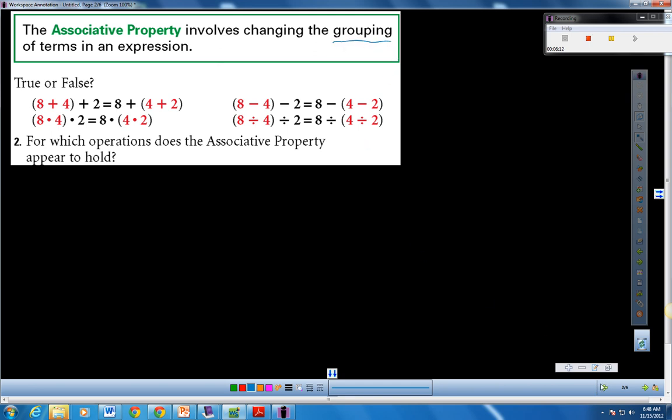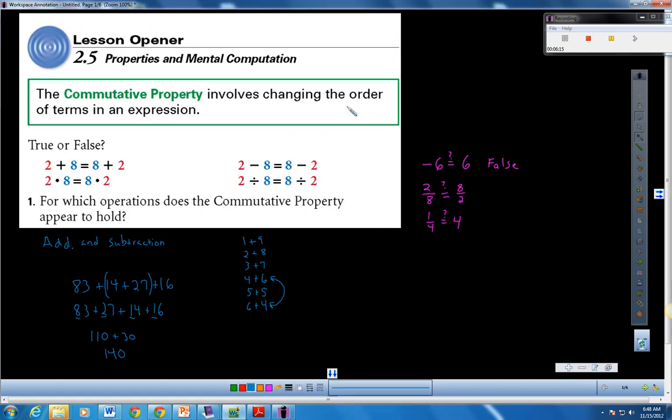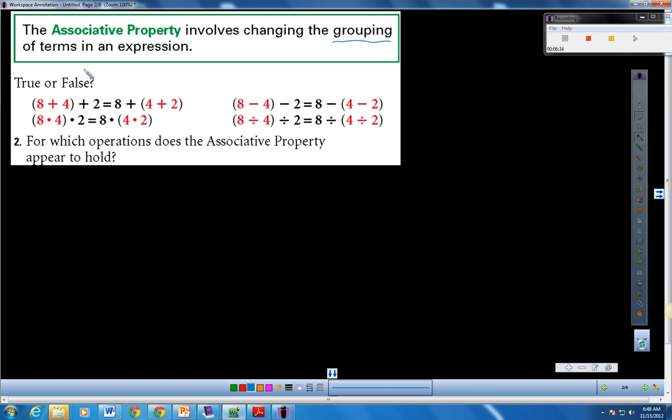If you look at the associative property right here, we're changing the grouping. Wait a second. What were we doing with the commutative property again, Mr. Claxton? Oh, we were changing the order. To commute is to move, to reorder. Everyone commutes to school every day. Remember, with the associative property, we've all heard the term guilt by association. Guilt by association means you're guilty just because of the people you hang with, because of the people that you are grouped with.